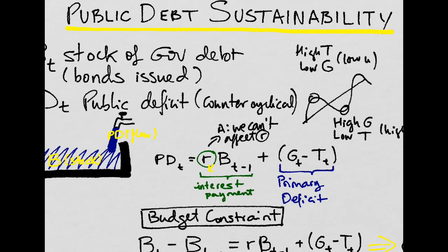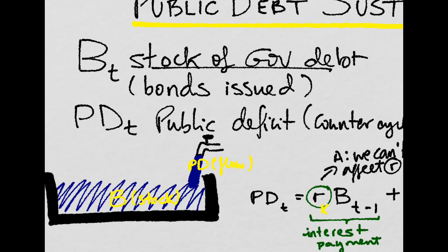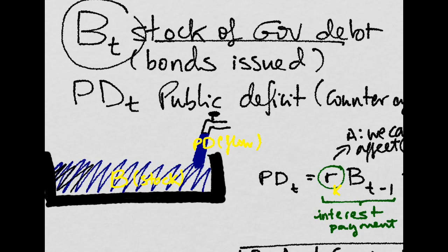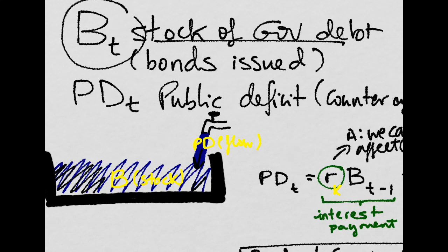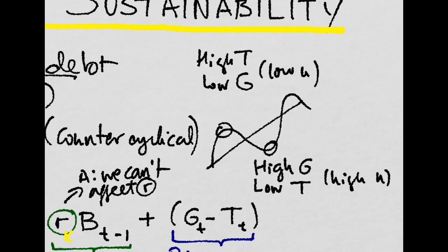Let's look now at public debt sustainability. Imagine we have a stock of government debt in the form of bonds, and every year the government adds a new flow to that stock if it runs a public deficit, PD. Public deficit, it's actually counter-cyclical.